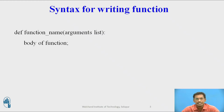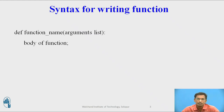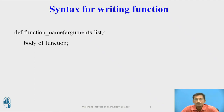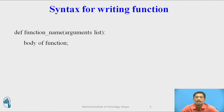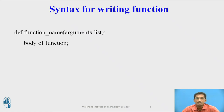After 'def', write a function name — a function name can be anything — then the argument list. The argument list is optional; you can pass arguments while calling the function or you may not pass any values. In Python there are no brackets, so a colon appears at the end of the function header, indicating the start of a new block. All statements with the same indentation belong to that function.